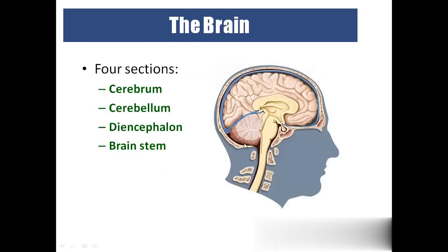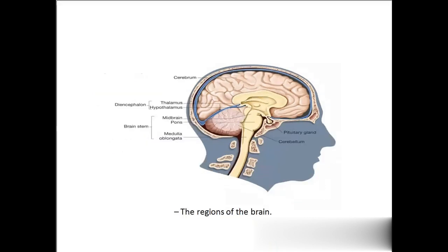Looking at the brain: we have the cerebrum (the large upper portion), cerebellum (also called the little brain or small brain), diencephalon, and brainstem. The brainstem consists of three parts: midbrain, pons, and medulla oblongata. The thalamus and hypothalamus together form the diencephalon. The pituitary gland is also located near this region.